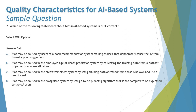Option B says: bias may be caused in an employee age-of-death prediction system by collecting training data from a dataset of patients who are already retired. We are trying to train the AI system using information of patients who are already retired, but if you want to predict employee age of death, you should use data about currently serving employees. This is correct about bias — it is a deviation — so we cannot call this incorrect.